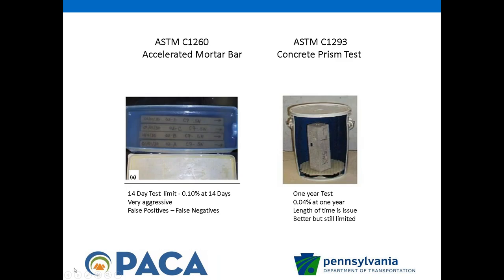Here is an idea of what the testing looks like. The accelerated mortar bar test — T303, also ASTM C1260 — is on the right-hand side. It is a rapid mortar bar test and a very aggressive test. The prism test gives you an idea of what we had to set up for in-house testing.